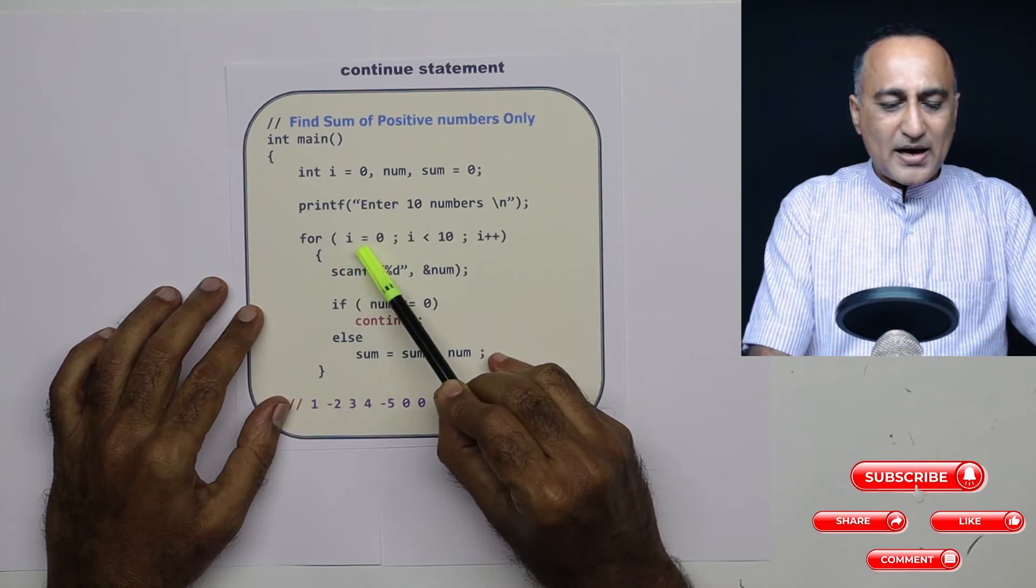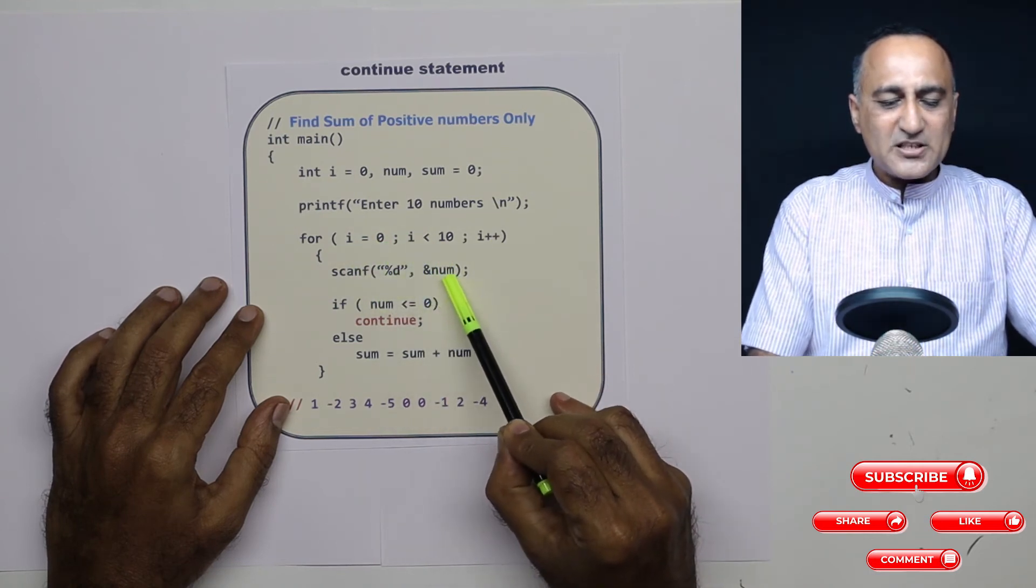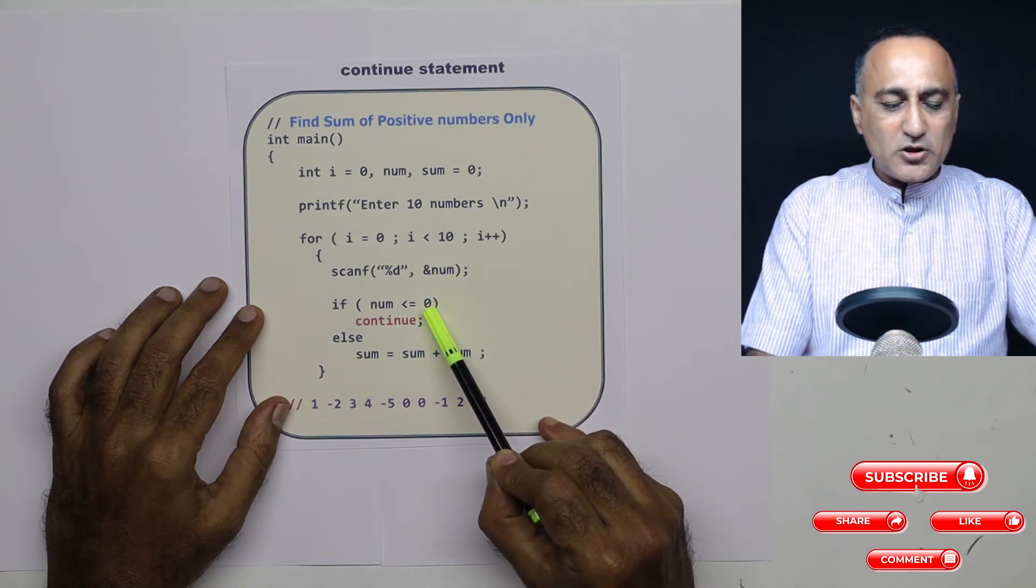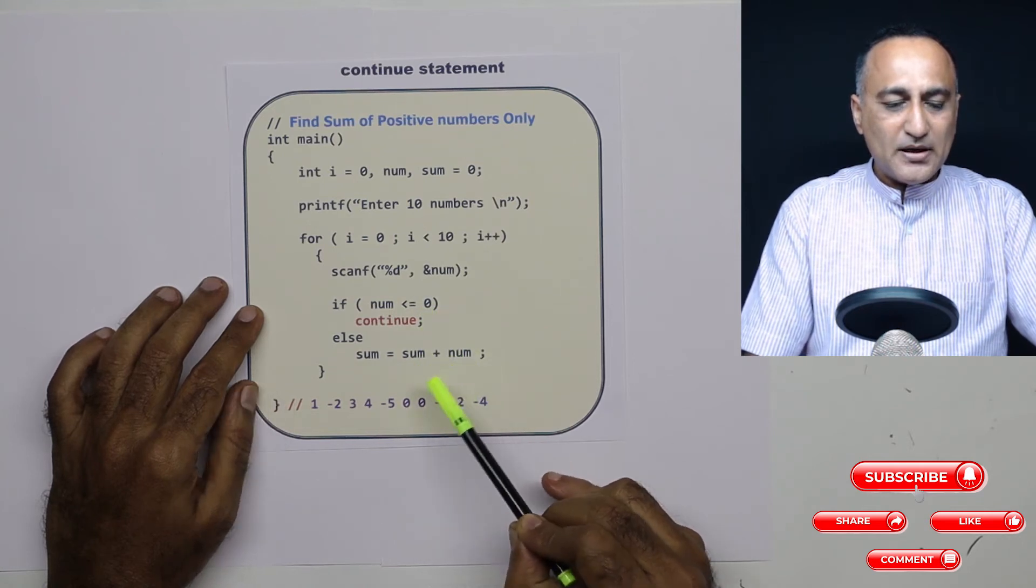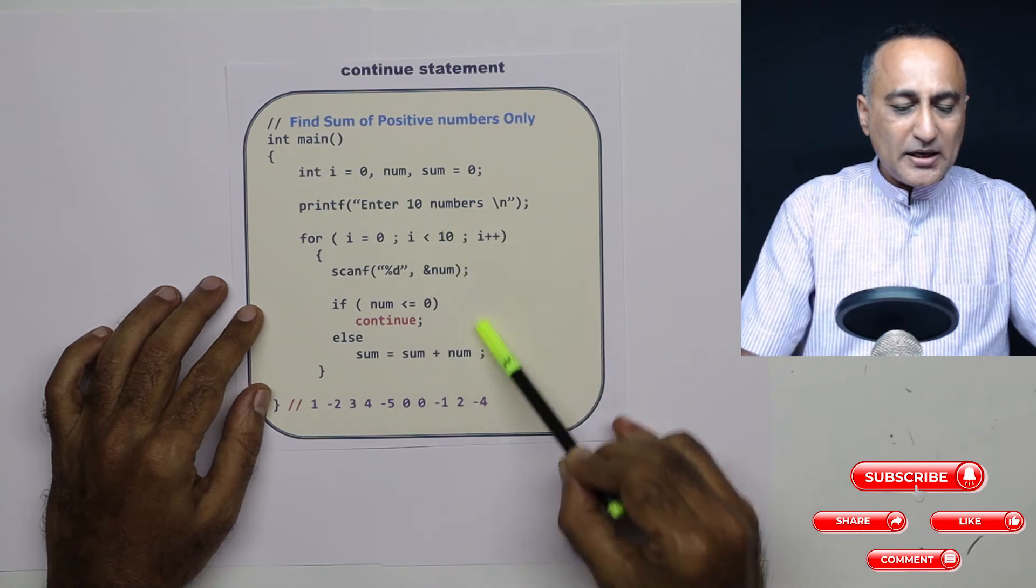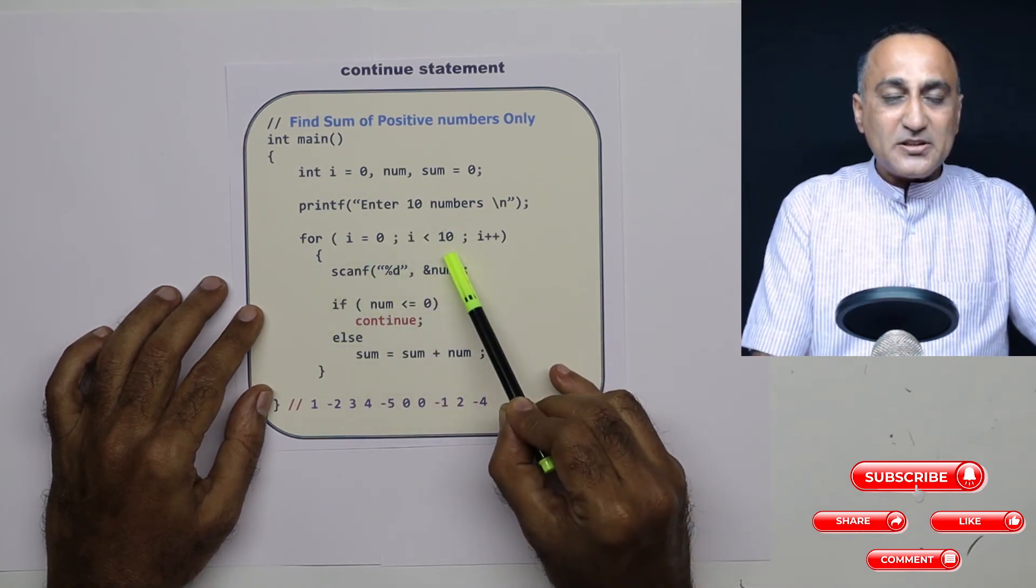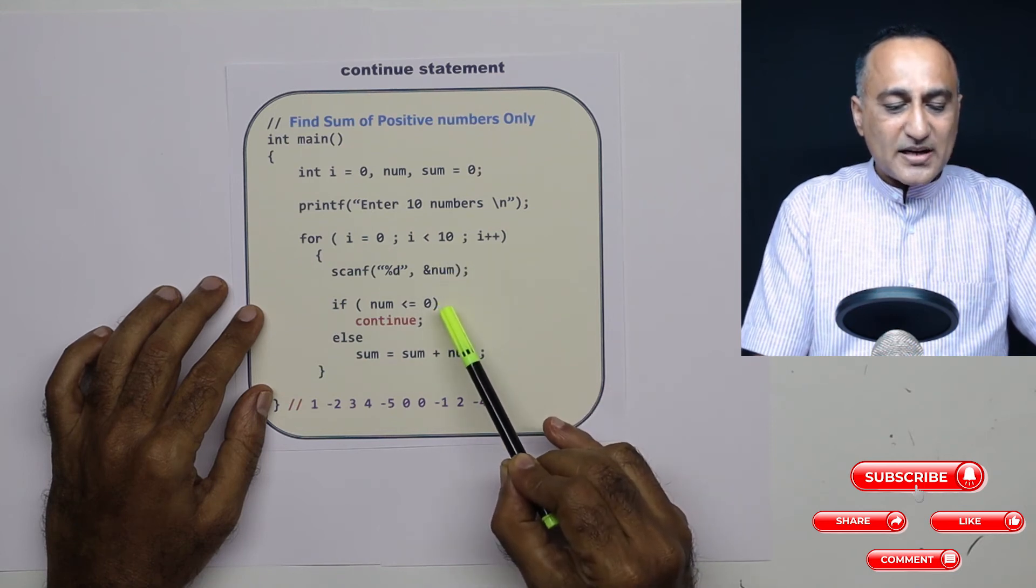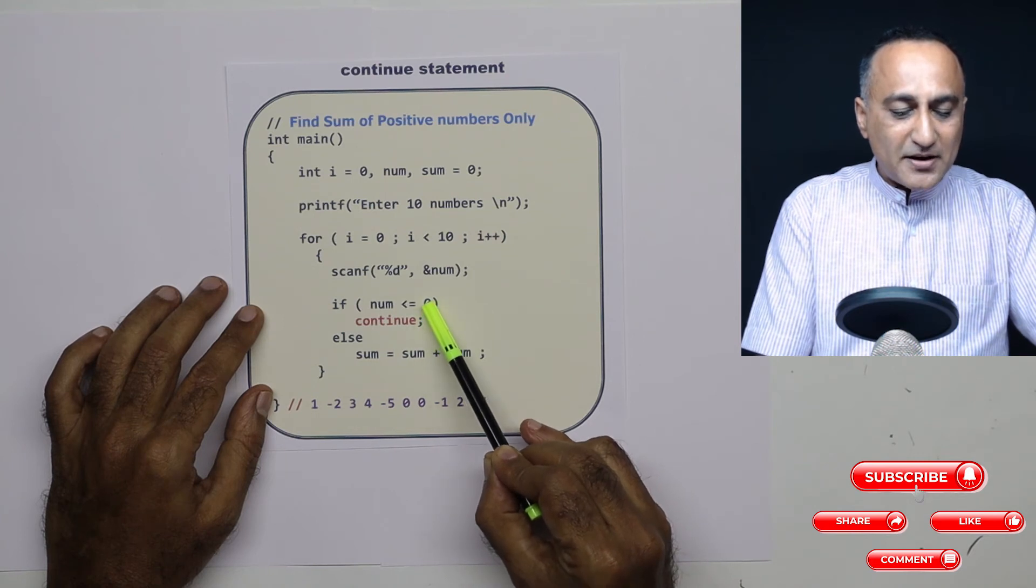So for i is equal to 0, i less than 10, I am reading the first number. So if the number is not equal to 0 or less than 0, I am taking sum and adding sum to number. So this particular process will keep continuing as long as 10 numbers are entered. But suppose I enter minus two.